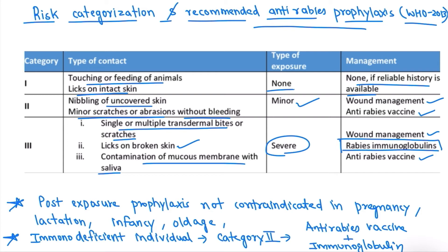Other important points: post-exposure prophylaxis is not contraindicated in pregnancy, lactation, infancy, or old age — there is no contraindication for these vaccines. In an immunodeficient individual who has a category 2 bite, we give anti-rabies vaccine plus immunoglobulin, whereas in a normal person we only give anti-rabies vaccine.